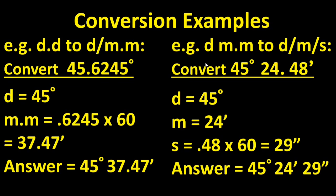In this example, we're going to convert 45 degrees, 25.48 minutes into degrees, minutes, and seconds. The degree remains 45, the minute remains 25, and the seconds are calculated by multiplying the decimal portion of the minute, .48, times 60, which gives you 29 seconds. The answer is 45 degrees, 24 minutes, 29 seconds.